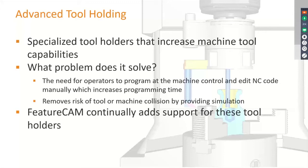FeatureCAM allows you to take advantage of advanced tool holding options. It removes issues like having to edit programs at the machine controller or edit NC code — a time-consuming activity. It also removes the risk of tool collision through simulation with the machine.